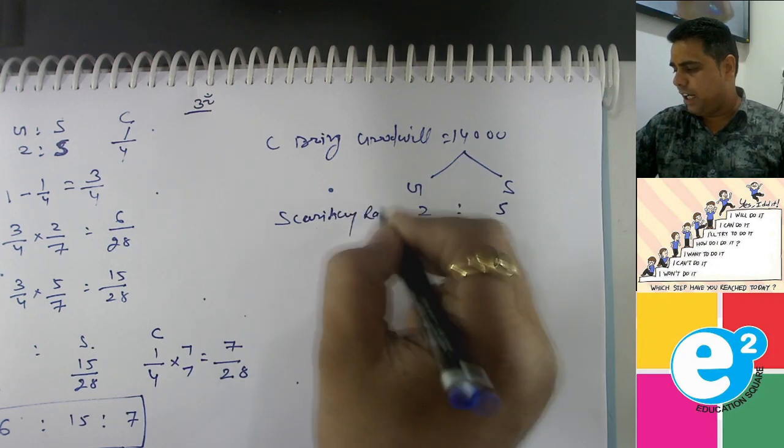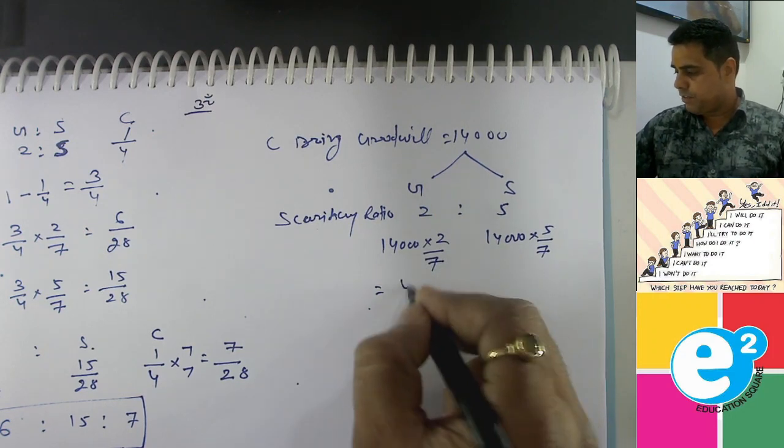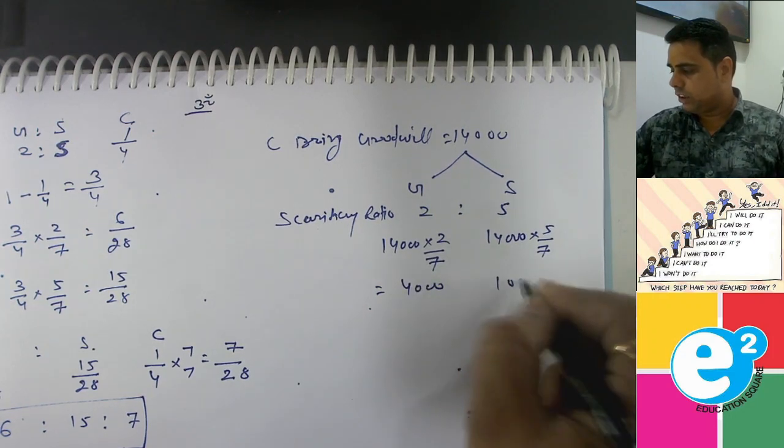Sacrificing ratio is the old ratio. 14,000 times 2 upon 7. 14,000 times 5 upon 7. How is it? 4,000 and 10,000.